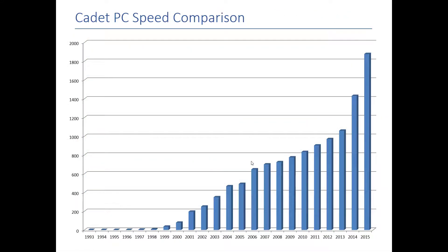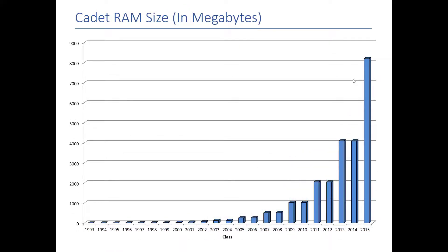We can also see the effects of Moore's Law on cadet laptops. Looking at various cadet metrics from the 90s up until 2015, you can see how laptops have sped up dramatically. A laptop from 2000 is orders of magnitude slower than a laptop released in 2015, and your laptops are going to swim circles around that 2015 laptop. RAM has also seen interesting increases — when I was a cadet, my laptop had 256 megabytes of RAM and I thought it was awesome. Now 8, 16, or 32 gigabytes is considered standard. That exponential growth is alive and well.